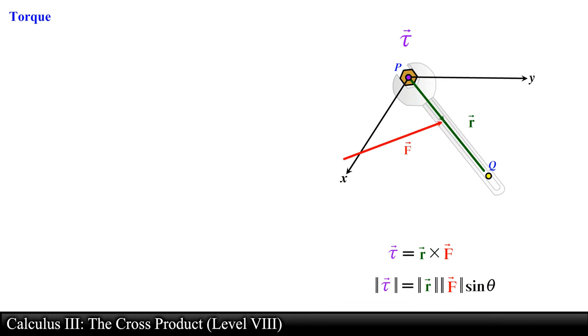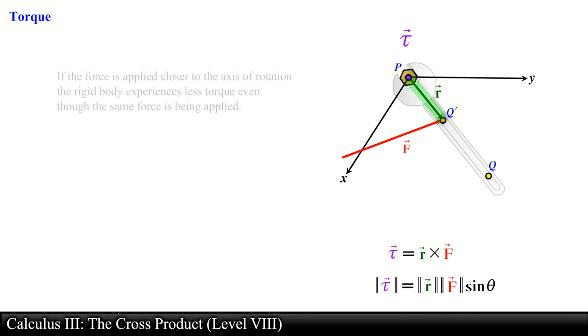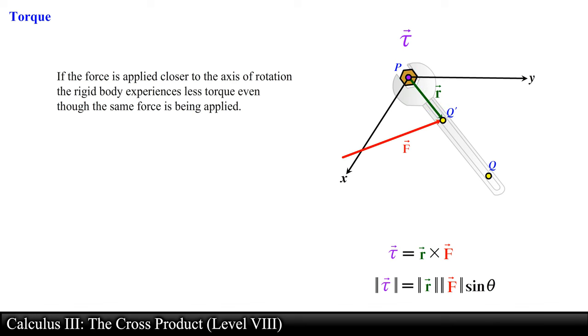Notice that if the force is applied closer to the axis of rotation, the rigid body experiences less torque even though the same force is being applied. If the angle between the position vector and force vector stays the same, we can generate a greater torque by simply applying the force further away from the axis of rotation.